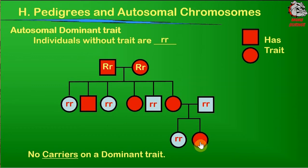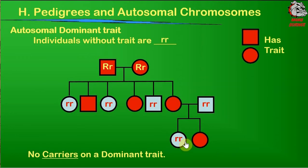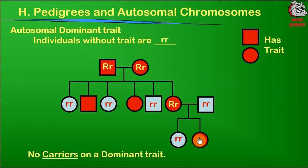Skipping ahead to this individual at the bottom: they have the trait, but it didn't come from the father. The father did not have the trait — he was lowercase r, lowercase r — which means the mother has the trait, so she has to have a big R. But she also has to have a lowercase r, because the only way for this firstborn girl to be lowercase r, lowercase r is if this mother is heterozygous: big R, lowercase r. Since this individual has the trait, she has to get the big R from the mother, and the father can only give a lowercase r. So this individual has to be big R, lowercase r.